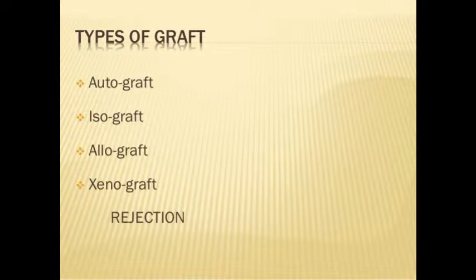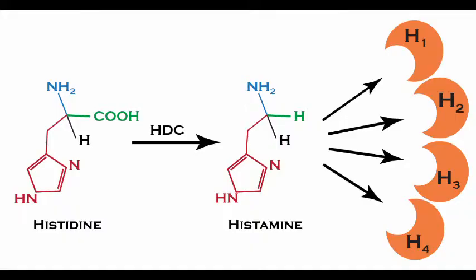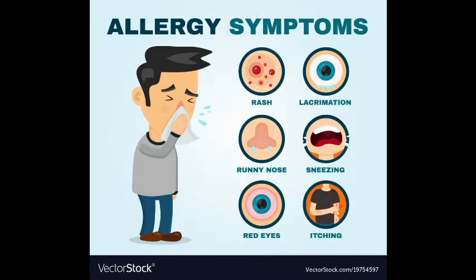Regarding immune system disorders — allergies are an exaggerated response to foreign antigens in our environment, usually brought about by IgE and eosinophils. During an allergic reaction, mast cells in various body parts secrete excess histamine and serotonin, causing problems like lung blockage, nasal stuffiness, and watery eyes. Drugs like antihistamines, adrenaline, and steroids quickly reduce the symptoms.